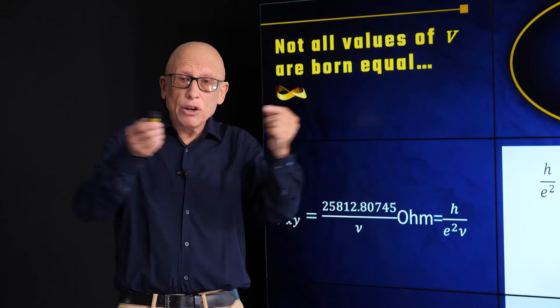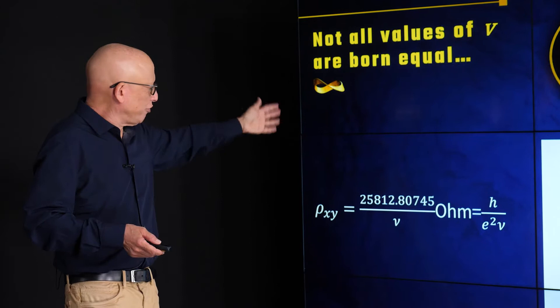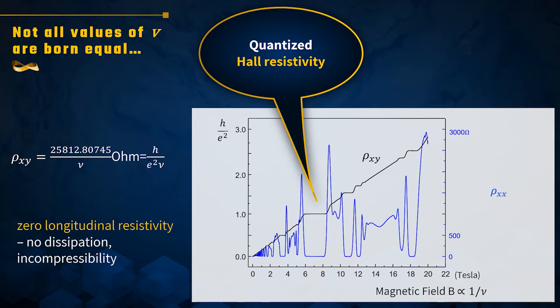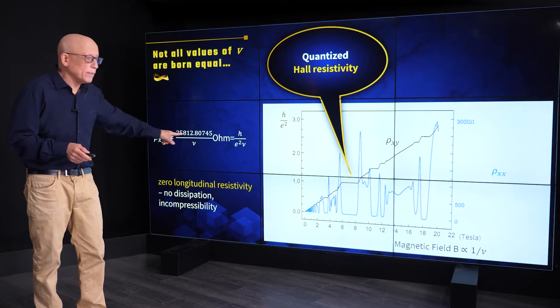It gets stuck on other values of nu and we will see what values those are. When I say that the value at the step is quantized to one part in a billion, here it is: 25,812.80745 ohms. It's quite surprising that h over e squared has the units of ohms. But that's the way it is. So that's the black line, the Hall resistivity.